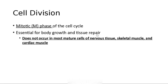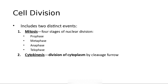Mitosis occurs in cells that are growing and is there for tissue repair. It does not occur in cells of the nervous system — if you damage the brain, it's damaged. Skeletal muscle is the same. Cardiac muscle, as of now, is the same — every now and then a scientist claims cardiac muscle repaired itself, but it gets disproven. So who knows?